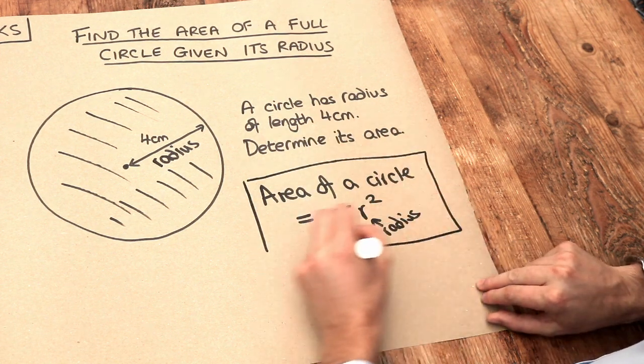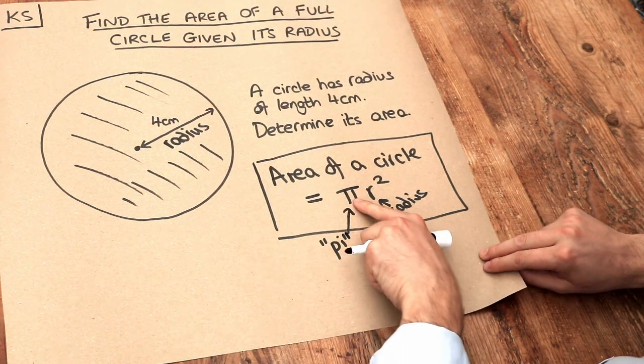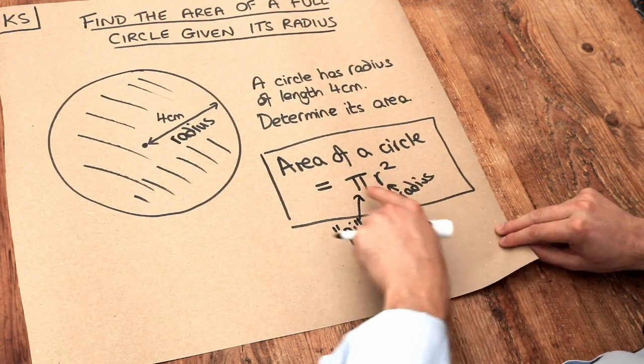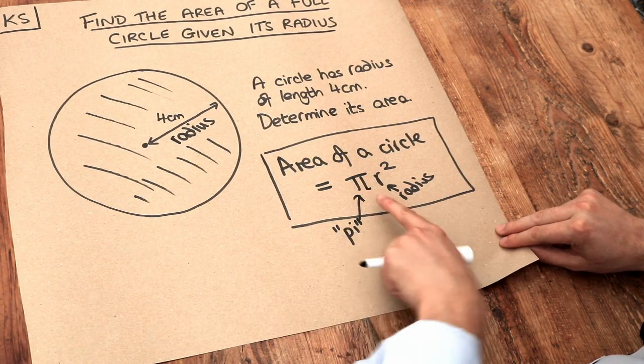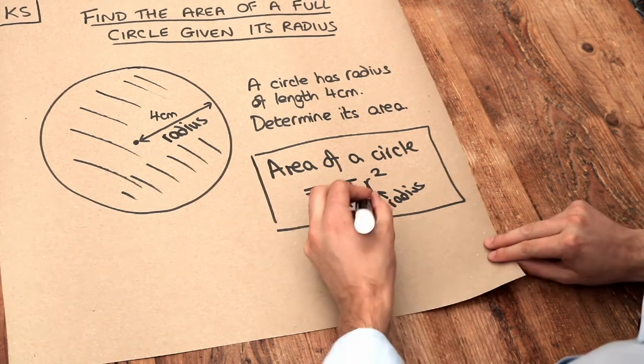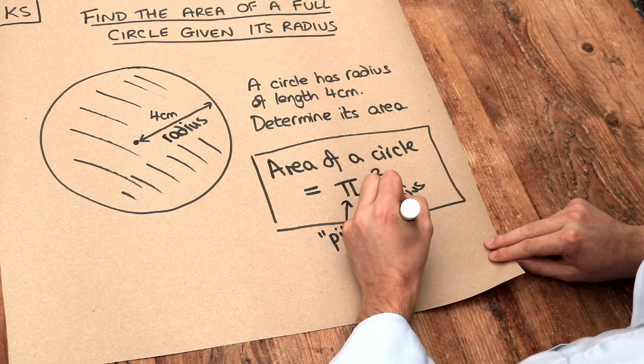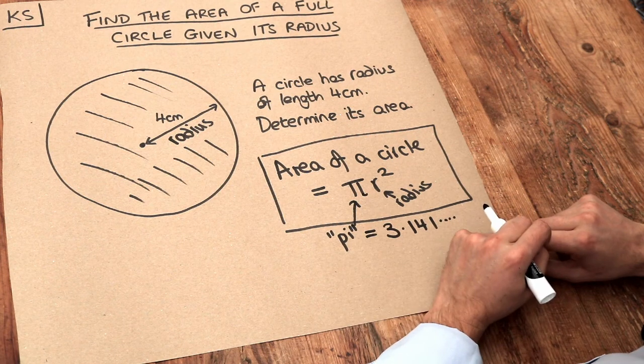And there's a few things to mention here. You might wonder what this symbol is. This is just a special number in maths, pi, which we've used a Greek letter to represent. We can use letters in our normal alphabet A to Z, but also we use Greek letters as well. So this is the Greek letter pi and it's just a number and it has a fixed value which is 3.141 and the digits go on forever. And you can find that on a calculator.